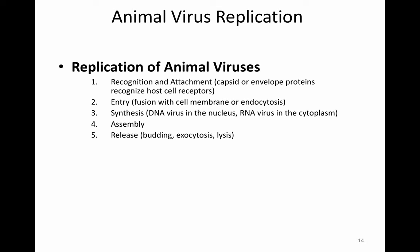Looking at the animal virus replication process: first we have recognition and attachment, where the capsid or envelope proteins recognize the host cell receptors. Then the entry mechanism — fusion or endocytosis. Then we get synthesis, when the DNA or RNA is replicated inside of the cell, and the viral proteins are produced. All the parts for the virus are made during the synthesis step, and this synthesis is done by the host cell enzymes — the polymerases and ribosomes are doing all the work for the virus. Once we have all the parts, they're assembled, and then released.